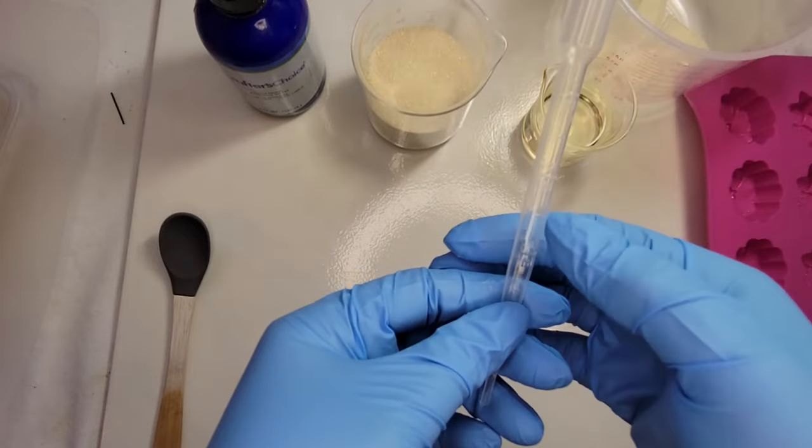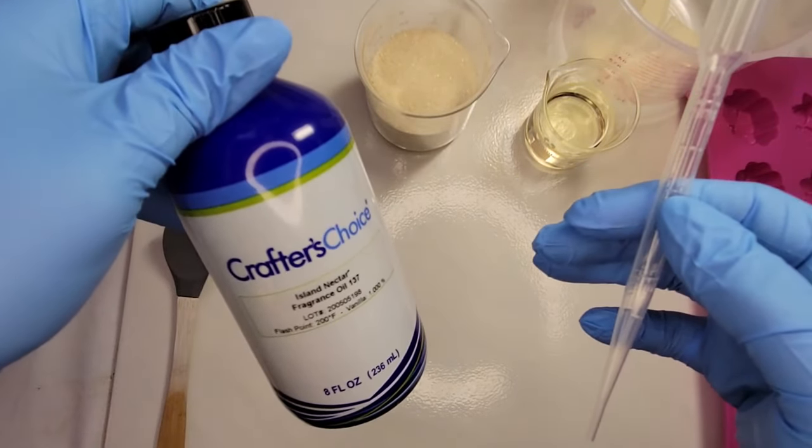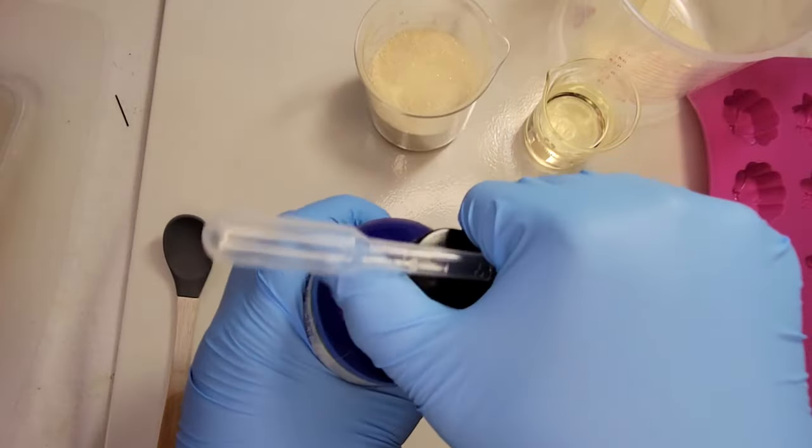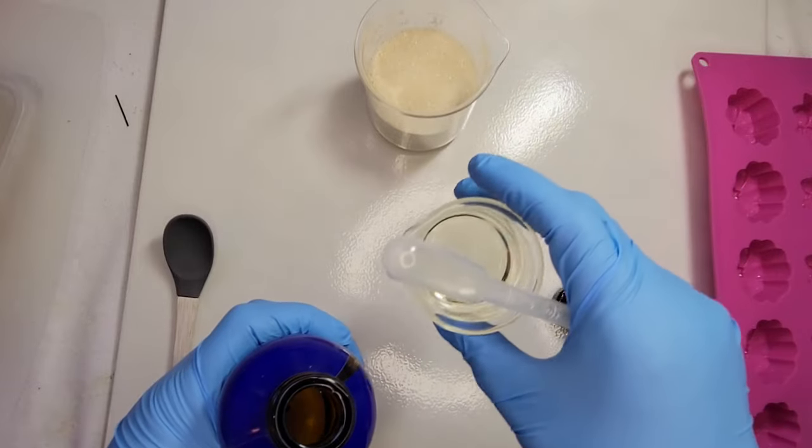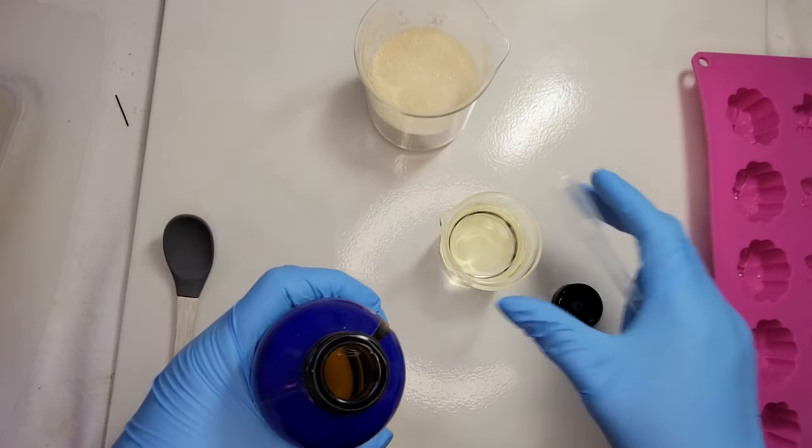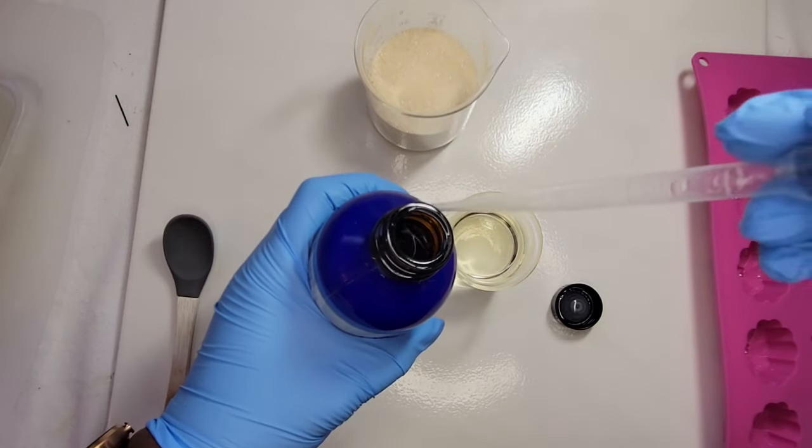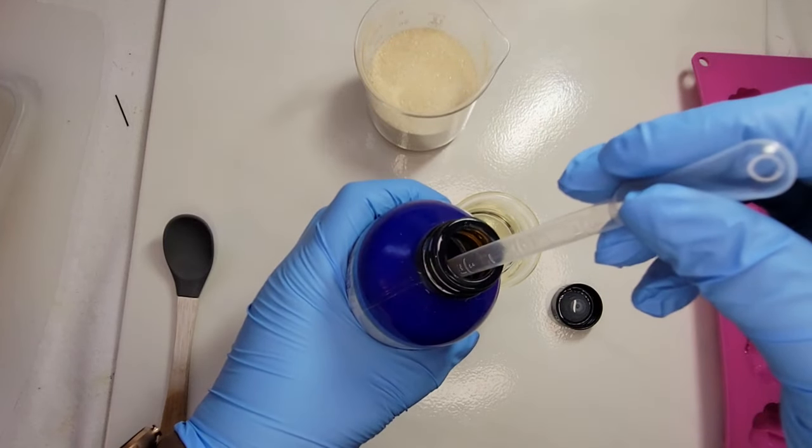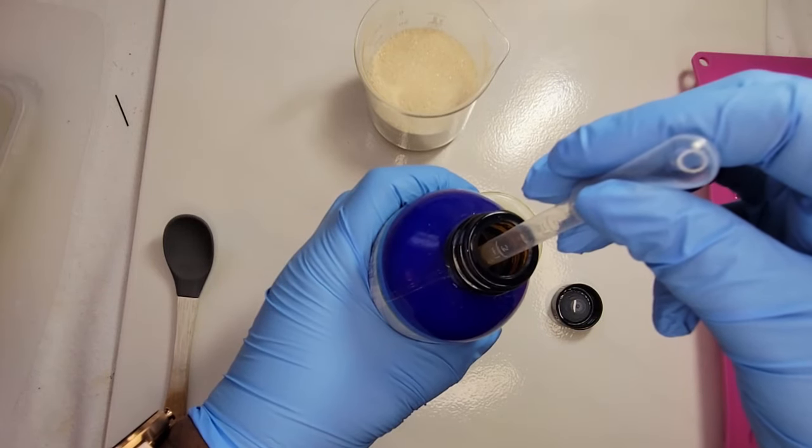We're going to start off by adding 2 mils of fragrance oil to our sweet almond oil. This fragrance is Island Nectar from Wholesale Supply Plus, and in this container we have 2 ounces of sweet almond oil. We'll add the fragrance to that. We're doing all of this ahead of time because once we melt the soap base we will have to move very, very fast.